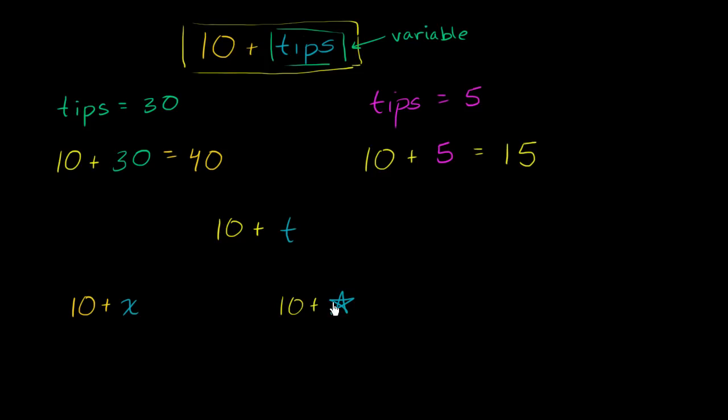But hopefully this gives you a general idea of just what a variable is. All it is is a symbol that represents different, a symbol that represents varying values. And that's why we call it a variable.